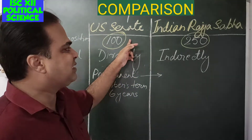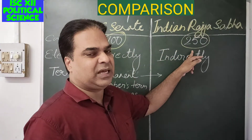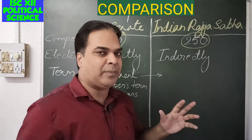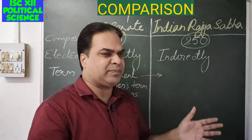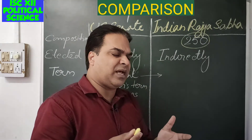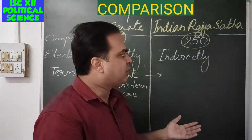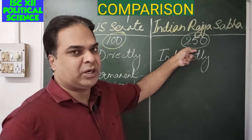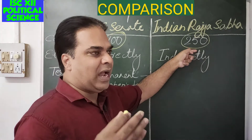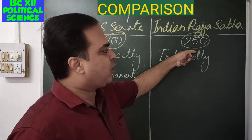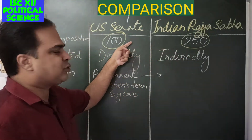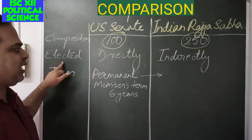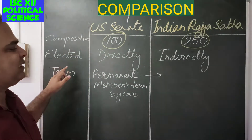The Indian Rajya Sabha has 250 members. The seats in Rajya Sabha are determined on the basis of population — states with larger populations have more Rajya Sabha seats. For example, the maximum number of members are represented from Uttar Pradesh because it is the most highly populated state in India. So the US Senate is based on equality, while Rajya Sabha is based on population.